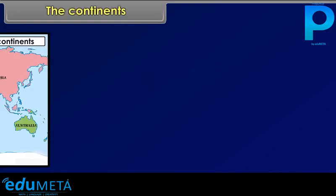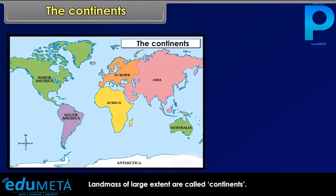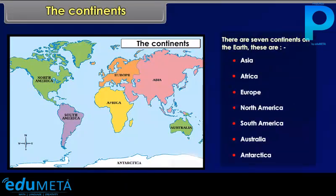Land masses of large extent are called continents. There are seven continents on the Earth. These are Asia, Africa, Europe, North America, South America, Australia, and Antarctica.